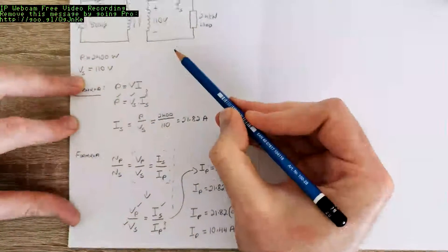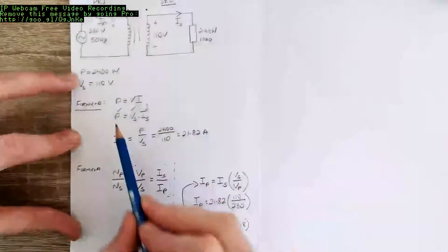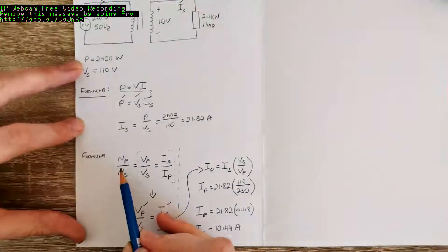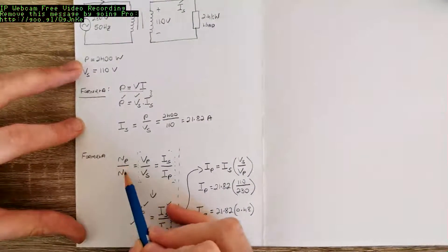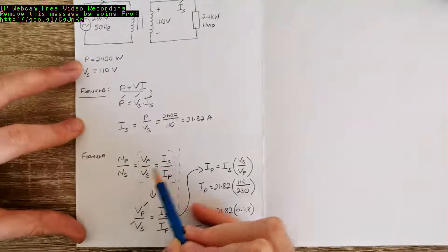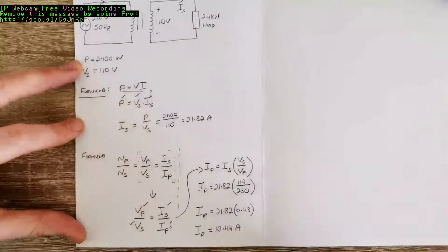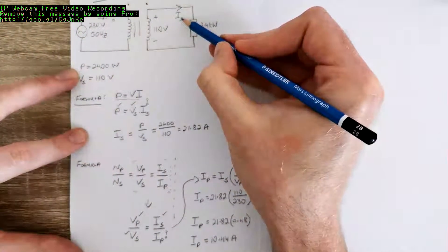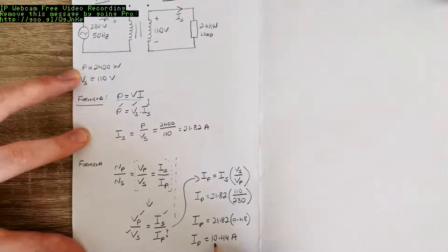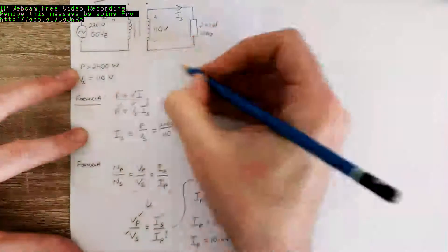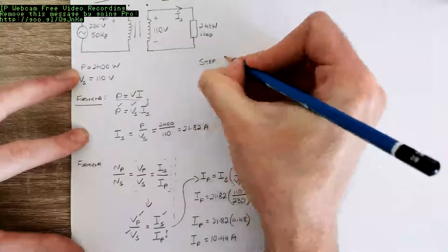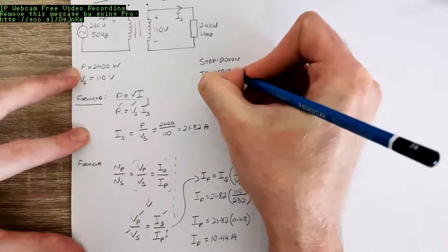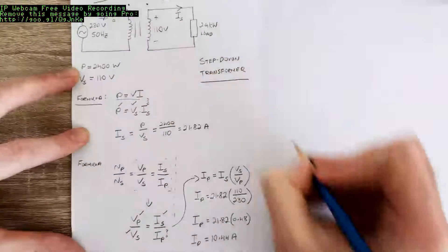For this type of question, the main points to remember are the relationship between voltage, current, and power, and the formula governing the turns ratio: Np over Ns equals primary voltage over secondary voltage equals secondary current over primary current. You should also think ahead — since the current in the secondary is higher than in the primary, this is a step-down transformer, so a lower primary current makes sense.